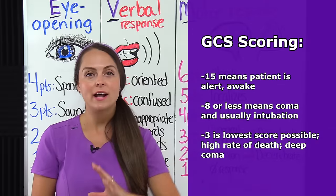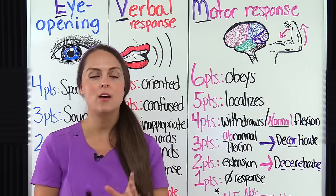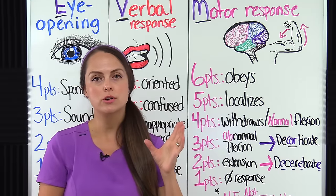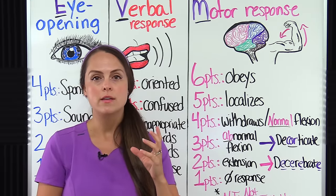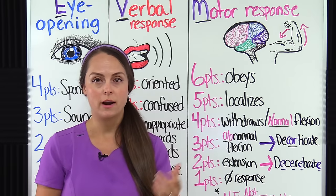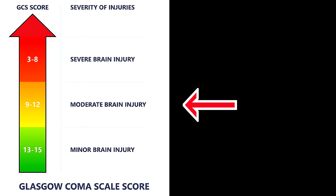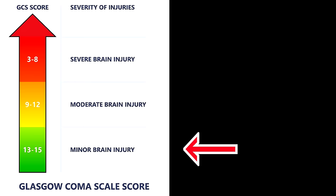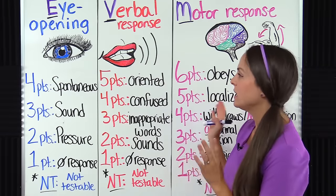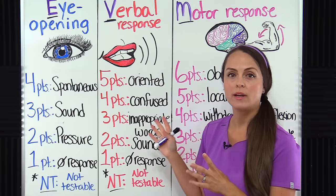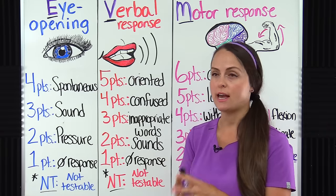This tool is really good at helping evaluate patients with a traumatic brain injury. We can group scores into mild, moderate, or severe brain injury: a score of three to eight would mean severe brain injury, nine to 12 moderate brain injury, and 13 to 15 mild brain injury. With this scale, each of the three response categories has their own points, and we add those points up to get a total GCS.